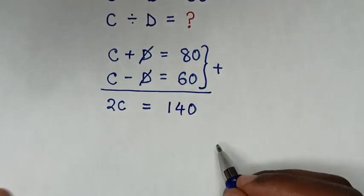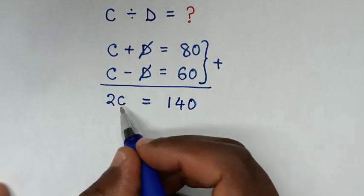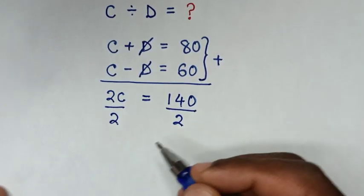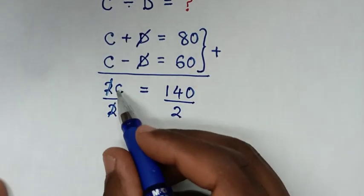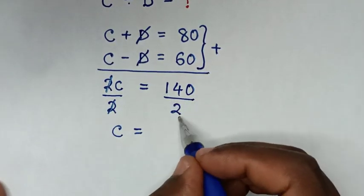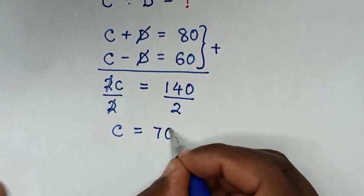Then in the next step, to find the value of C, we divide by 2 on both sides. So this and this will cancel, then it will be C equals 140 divided by 2 is 70.